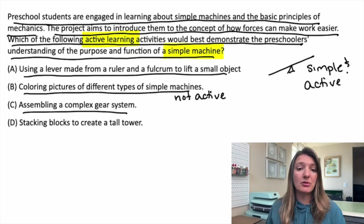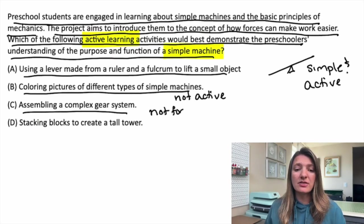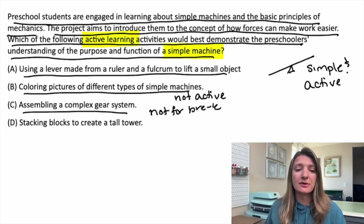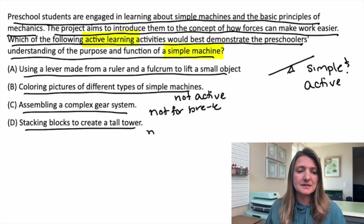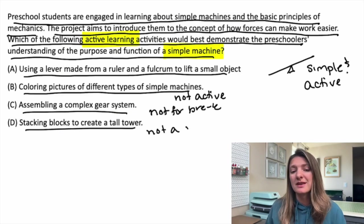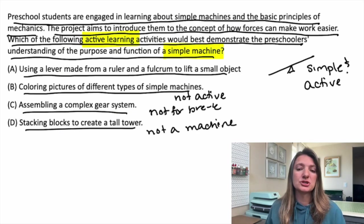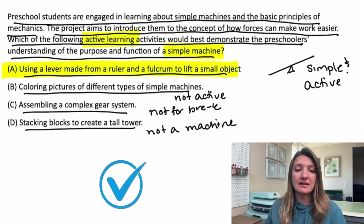Option C: assembling a complex gear system — this is really not appropriate for a preschooler; anything complex isn't right for pre-K. Option D: stacking blocks to create a tall tower — a tall tower is not a simple machine. So our best answer is A: using that lever made from a ruler and a fulcrum to lift a small object.